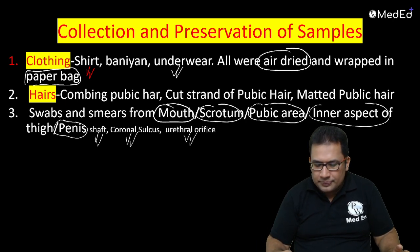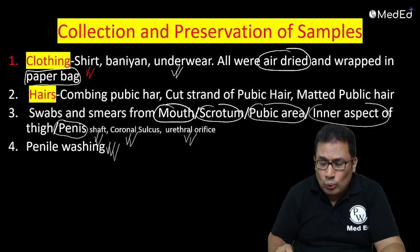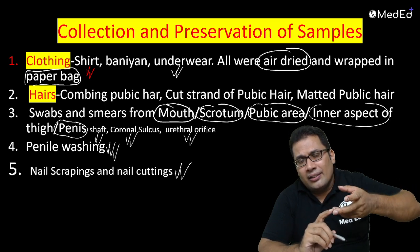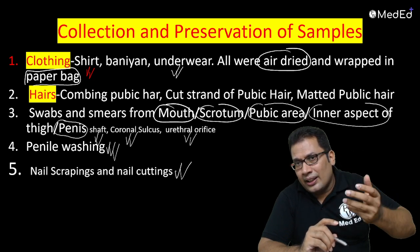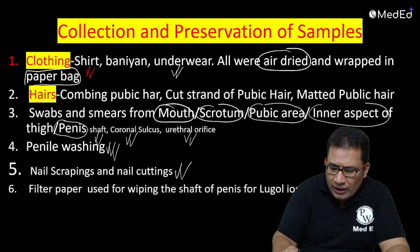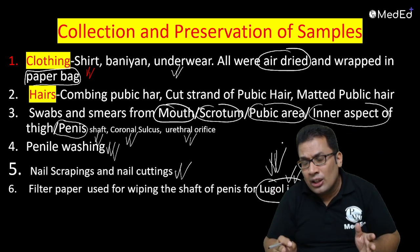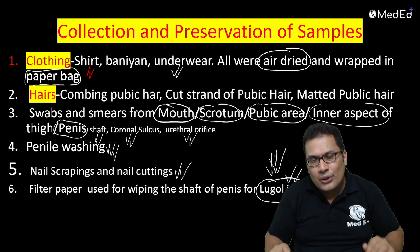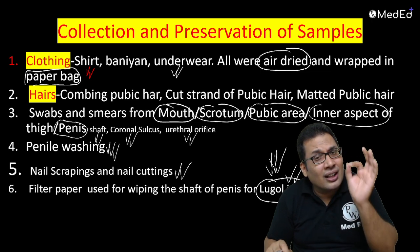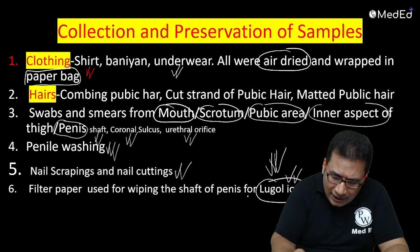Also collect penile washings — look for any vaginal epithelial cells present on the penis. Collect nail scrapings — debris under the nails can give an idea about the assault. Filter paper is used for wiping the swabs. A commonly asked question is about the importance of toluidine blue and colposcope — both are important. Also collect blood for grouping and DNA analysis.